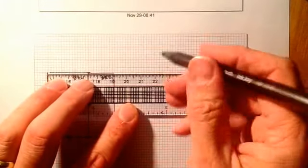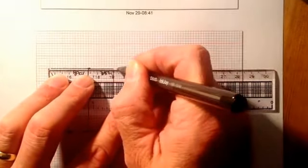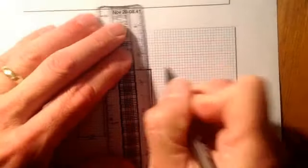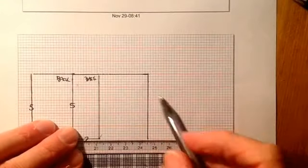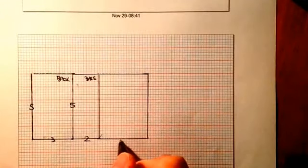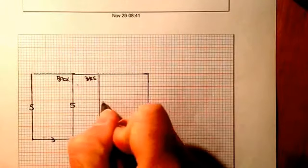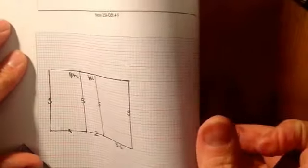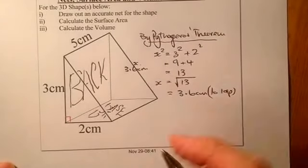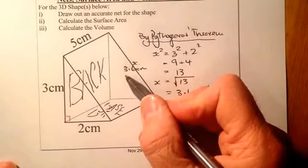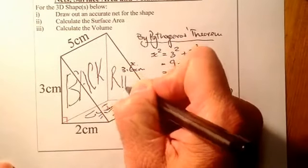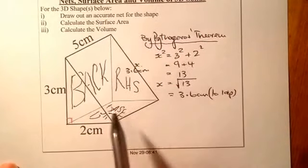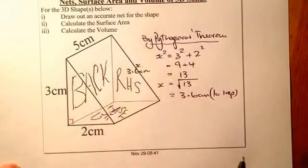I'm going to go 3.6 — that takes me out to there. I'll come down to there and close it off. So I know that this is 3.6 and that there is still five. Going back up to the shape, I need to look at the right-hand side — this one here is the right-hand side — and I know that's a triangle.